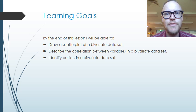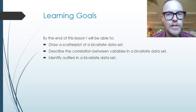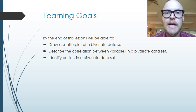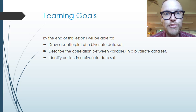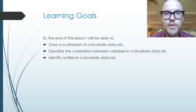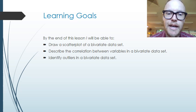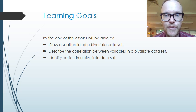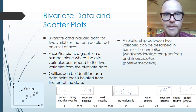Today we're going to look at bivariate data and scatter plots. The learning goals for today's lesson are that by the end of this lesson you'll be able to draw a scatter plot of a bivariate data set, describe the correlation between variables in a bivariate data set, and also identify any outliers.